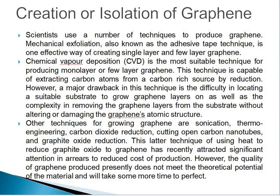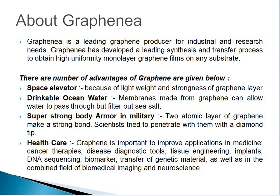The graphite oxide reduction technique — using heat to reduce graphene oxide to graphene — has recently attracted significant attention in the area of reduced cost of production. However, the quality of graphene produced presently does not meet the theoretical potential of the material and will take some more time to become perfect. Another method to produce graphene is through Graphenea, a leading graphene producer for industry and research needs. Graphenea has developed a leading synthesis and transfer process to obtain high-uniformity monolayer graphene film on any substrate.